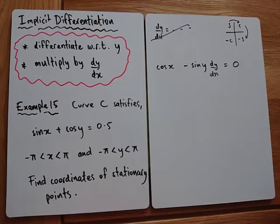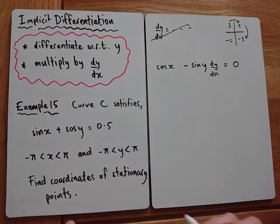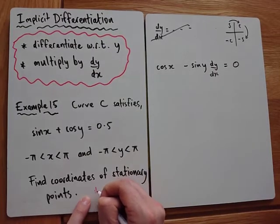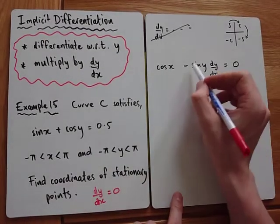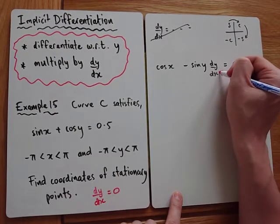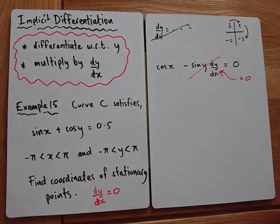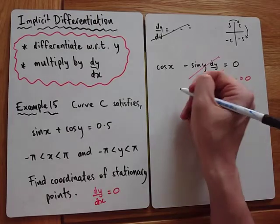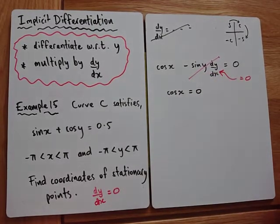So what are we going to do now? It's a stationary point. So I suppose we could do a bit of rearranging here, but there is a shortcut. A lot of people do a lot of extra work on these questions. As soon as I see stationary points, I would write dy/dx would equal zero. So that there, we know dy/dx will equal zero. So essentially that whole term will disappear. And we're left with cos(x) equals zero.